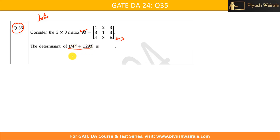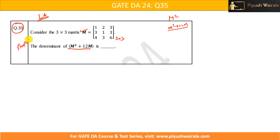Generally, you might first calculate M squared, then compute M squared plus 12M, and then take the determinant — but this is a lengthy process. This is not what we should do in the GATE exam. This question is checking whether you know how to apply the properties of determinants.